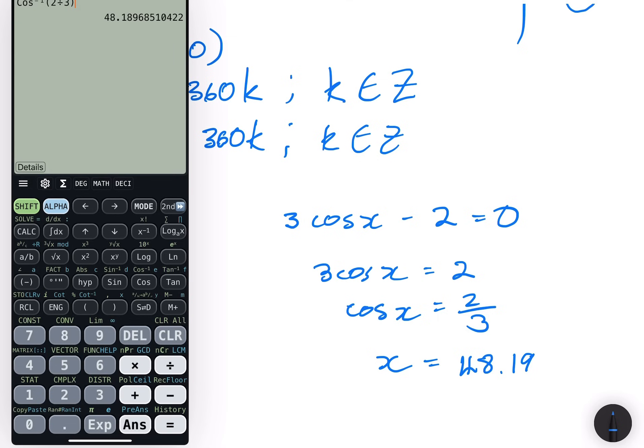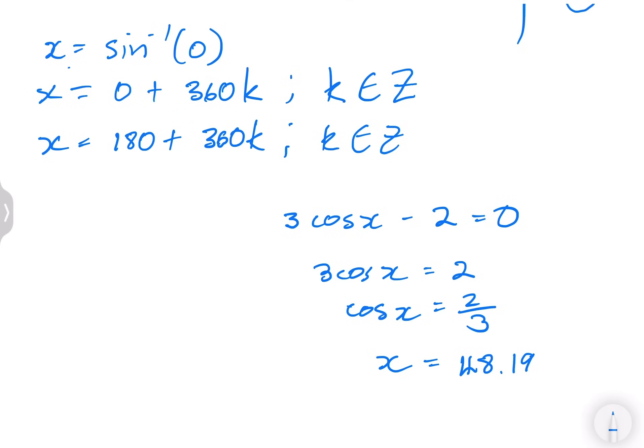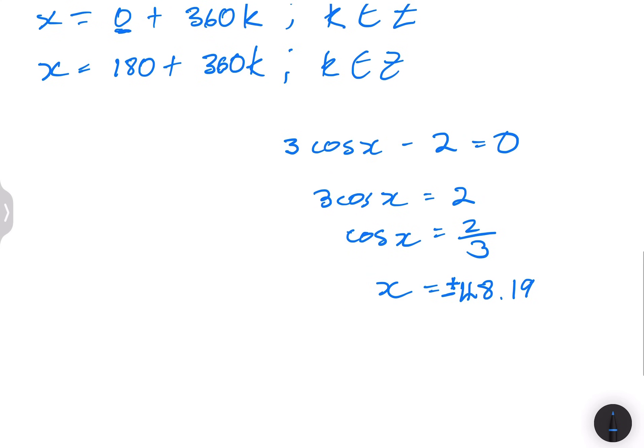So that's 48.19. And remember, so for cos, what we do is we'll say plus or minus. So remember for sine, you say that it's the reference angle and 180 minus. But for cos, you always say plus or minus. If you don't understand where that comes from, please just have a look at my longer videos on this particular section. It's in the trigonometry playlist. So plus minus 48.19 plus K 360. But remember, we always say K is an element of integers.